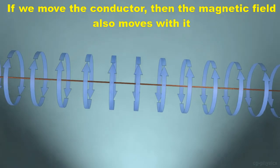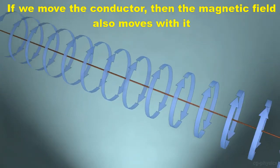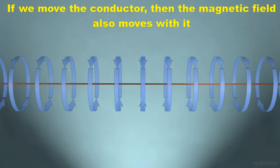If we move the conductor, then the magnetic field also moves with it. If we move the conductor any side, the magnetic field follows.